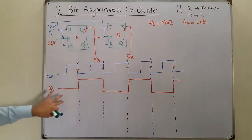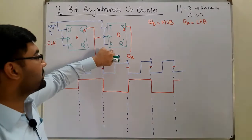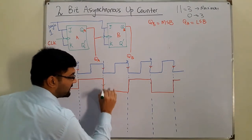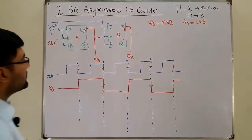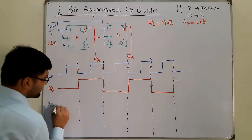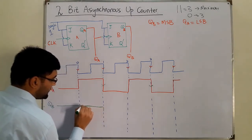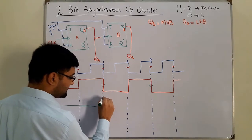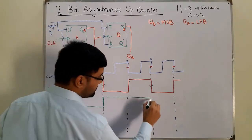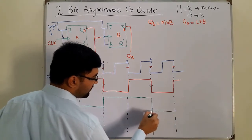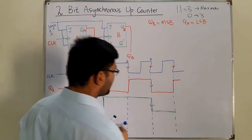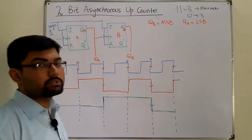Now the clock for flip-flop B is the QA waveform. Flip-flop B also operates on the negative edges of this clock. Initially QB is low. At the first falling edge of QA it toggles to high. At the next falling edge it toggles back to zero and stays low until the next falling edge arrives. If we had a third flip-flop, it would operate on this next edge — which we'll see in the next video.